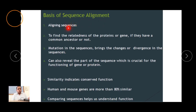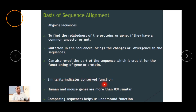Sequence alignment helps in finding the relatedness of a protein or gene and whether they share a common ancestor. If you have isolated a sequence, you can check how many sequences worldwide align with yours using programs like BLAST. Mutations bring divergence in sequences, and alignment can reveal parts of a sequence crucial for gene or protein function. Similarity indicates conserved function — meaning a particular gene has remained the same throughout a species' evolutionary history.